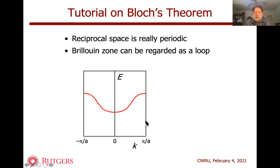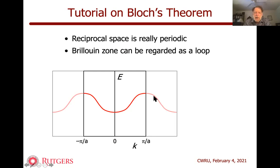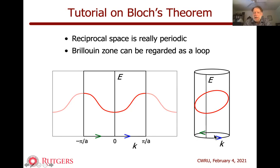In textbooks, you often see the Brillouin zone. For a one-dimensional crystal, it goes from -π/a to π/a, where a is the periodicity. There's some energy band. Momentum space is periodic because the state over here is really the same as the state over there, which means another way to think about it is to plot the Brillouin zone as a loop. Then on a cylinder where energy goes vertically and the Brillouin zone is the loop, I can plot the energy band on the cylinder. This makes it clear that the energy band lives on a closed manifold, and when things live on a closed manifold, they're susceptible to topological classification.